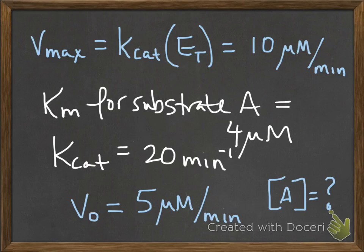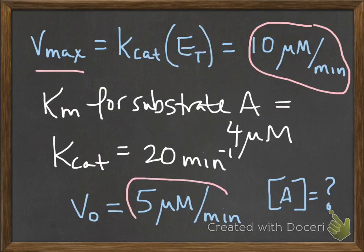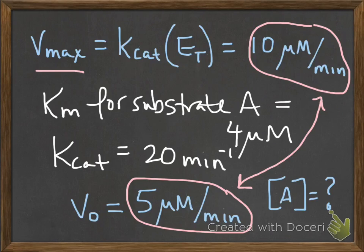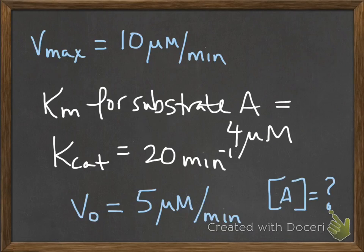Now here's where the trick comes in that allows you to have a shortcut. You notice that your Vmax is 10 micromolar per minute, and that is exactly twice that of the velocity that you had measured. So there's a relationship here that lets you take a conceptual shortcut.